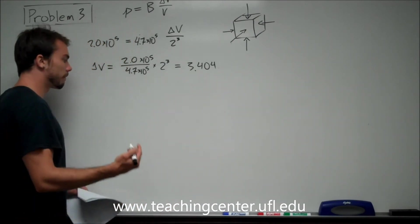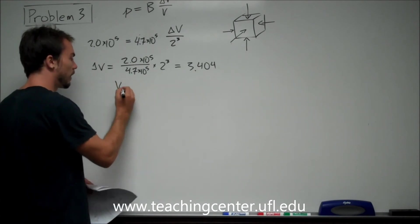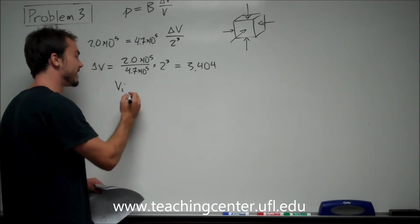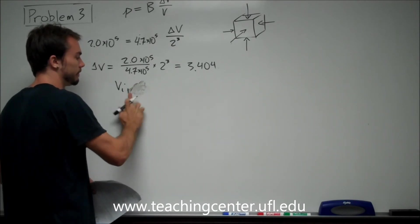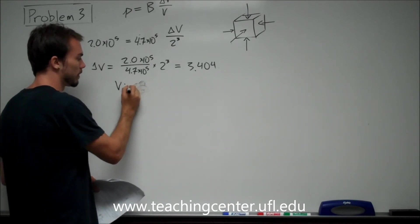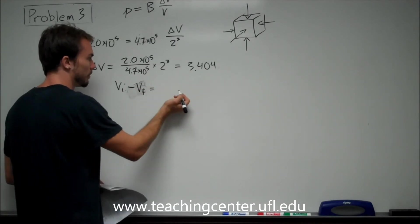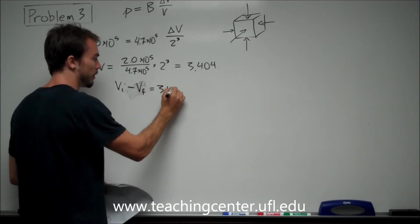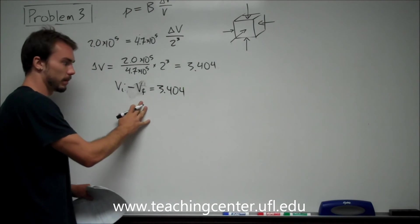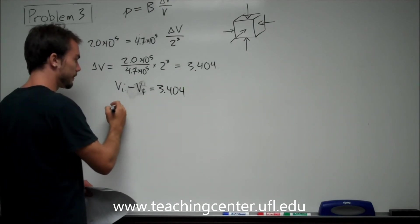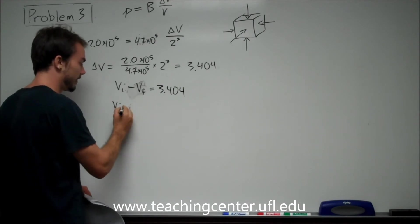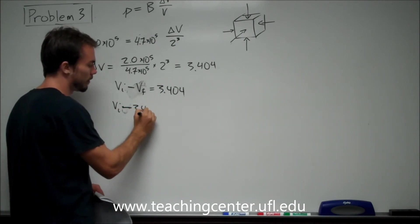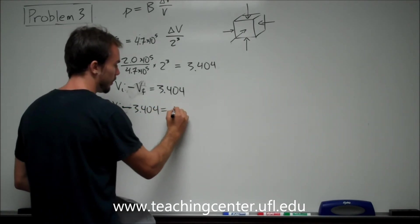So if the cube is getting smaller, what we're going to do is we're going to say our initial volume minus our final volume is going to be equal to 3.404. That's our change in volume. It's getting smaller. So our initial volume minus 3.404 is going to be equal to our final volume.